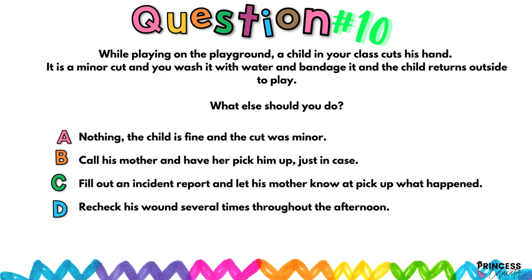Question number ten: While playing on the playground, a child in your class cuts his hand. It's a minor cut — you wash it with water, bandage it, and the child returns outside to play. What else should you do? A) Nothing — the child is fine; B) Call his mother to pick him up just in case; C) Fill out an incident report and let his mother know what happened; D) Recheck his wound several times throughout the afternoon.